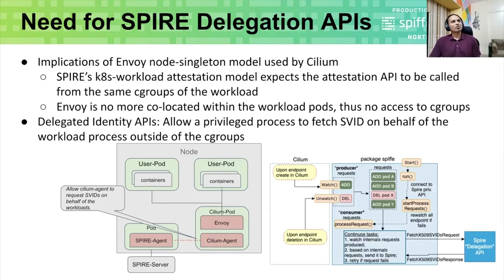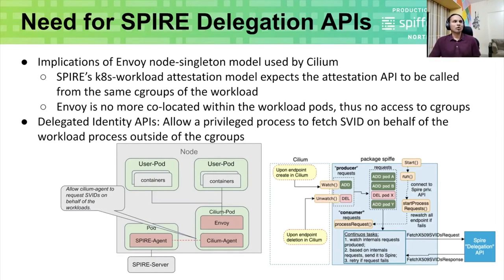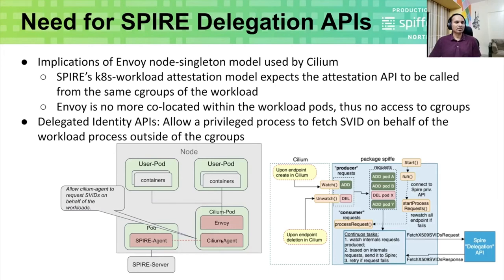The implications of Cilium's Envoy node singleton model: Spire's Kubernetes workload attestation model currently expects that the attestation APIs can be called only from the same cgroups of the workload. In Istio, Envoy is part of the same pod as the workloads being a sidecar, so it is able to use the attestation APIs. But in case of Cilium, Envoy is no longer co-located within the workload pods and thus has no access to cgroups. This led to the development of Delegated Identity APIs, which allow a privileged process to fetch SVIDs on behalf of workloads outside the cgroup. In this case, the Cilium agent is a privileged process and can request SVIDs on behalf of the workloads from the Spire agent.